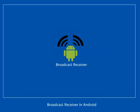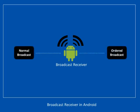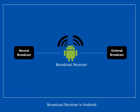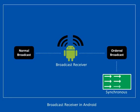The two major classes for Broadcast Receiver are Normal Broadcast and Ordered Broadcast. Normal broadcasts are asynchronous; receivers of the normal broadcast run in an undefined order, often at the same time. Ordered broadcasts are delivered to one receiver at a time. Ordered broadcast can propagate results to the next receiver, and can also abort the broadcast so that it cannot be passed to other receivers.